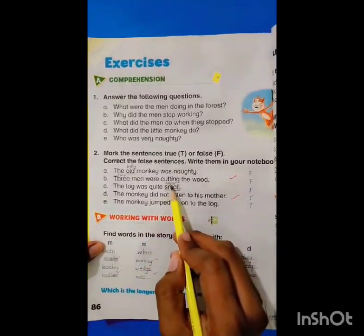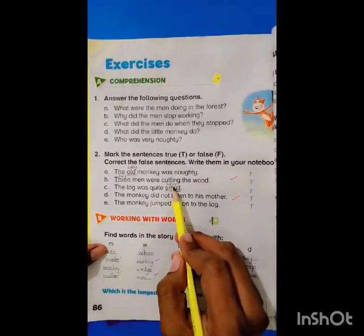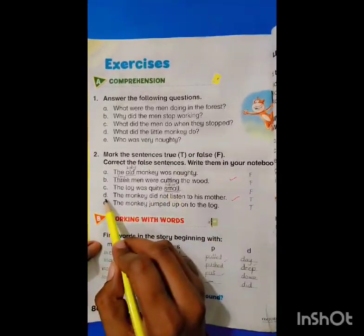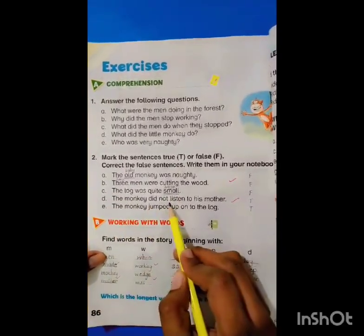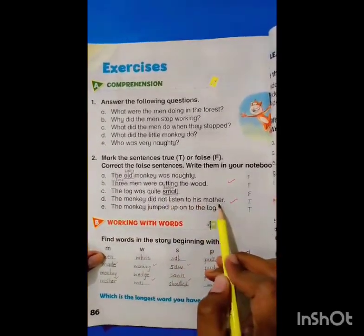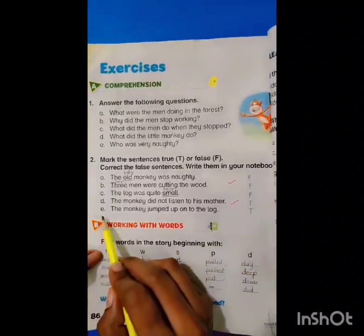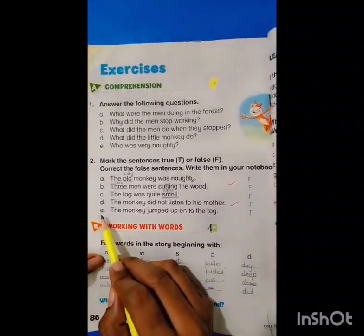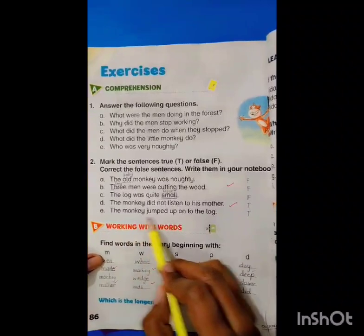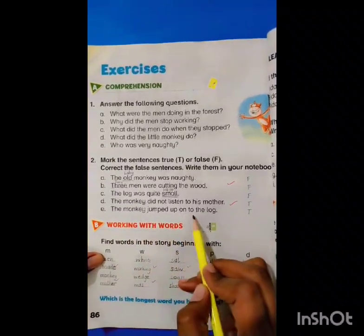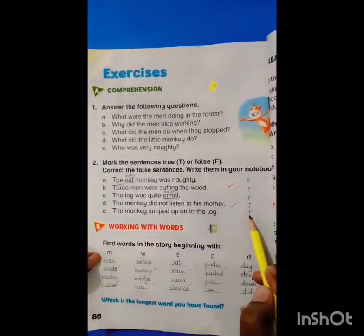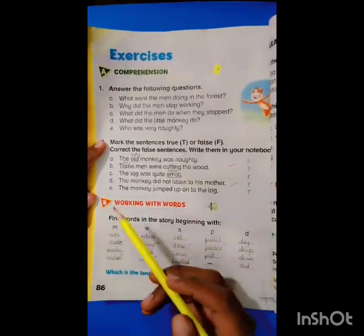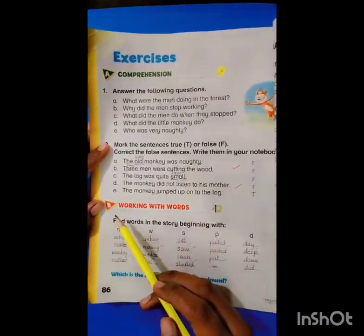The log was huge. Next statement: 'The monkey did not listen to his mother.' It's a true statement. And the last one: 'The monkey jumped up onto the log.' It's a true statement. Dear students, now we will start Act B.